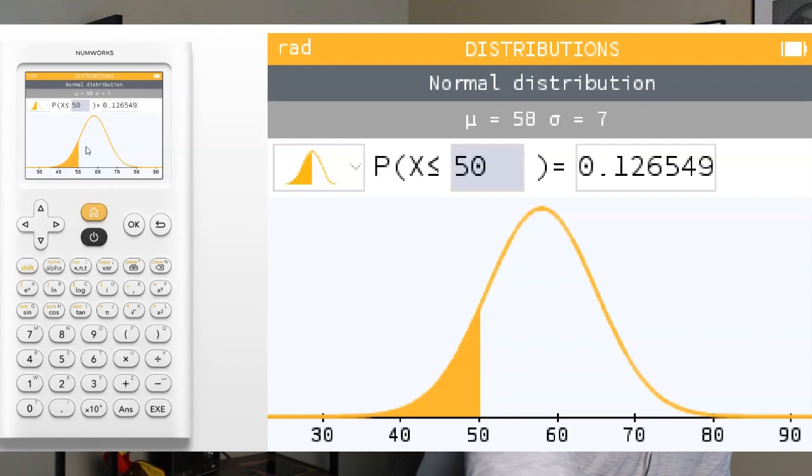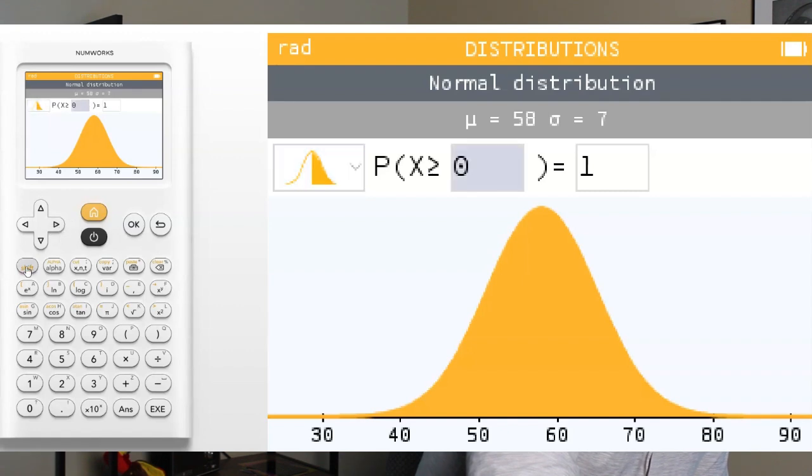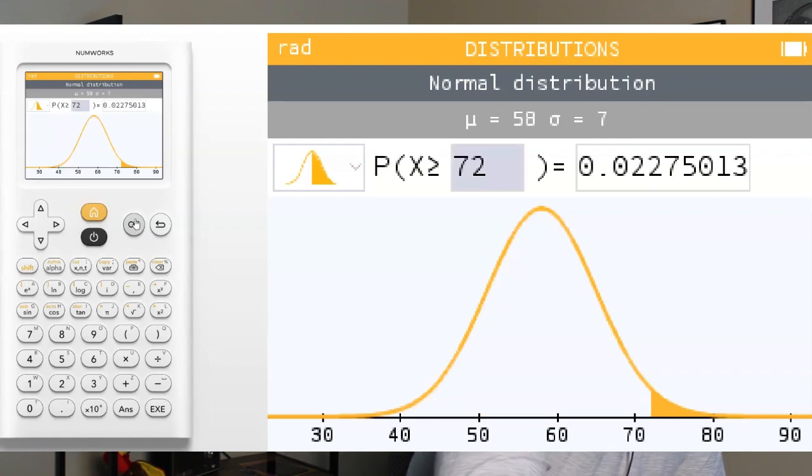All right, let's talk about above 72. So the next thing we're going to do is we're going to go over here, hit OK, we're going to select the above or to the right option, and then we're going to type in 72, and hit OK, and boom, notice it shades the area above 72, and it tells us roughly 2.28% of data is above 72. Really simple.